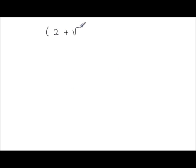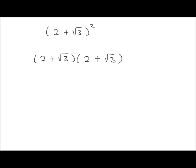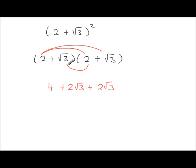Expanding (2 + root 3) squared. Squaring means multiplying by itself: (2 + root 3)(2 + root 3). So 2 times 2 is 4, 2 times root 3 is 2 root 3, root 3 times 2 is another 2 root 3, and root 3 times root 3 is 3. Simplifying: 4 + 3 = 7, and 2 root 3 + 2 root 3 = 4 root 3. The answer is 7 + 4 root 3.